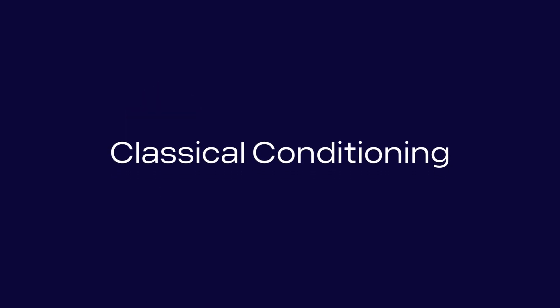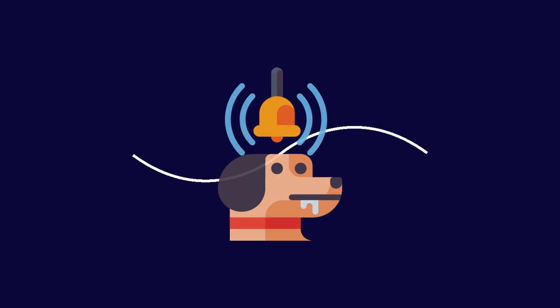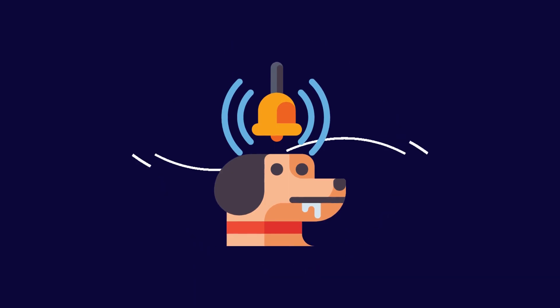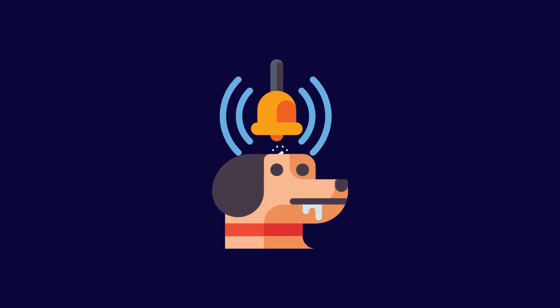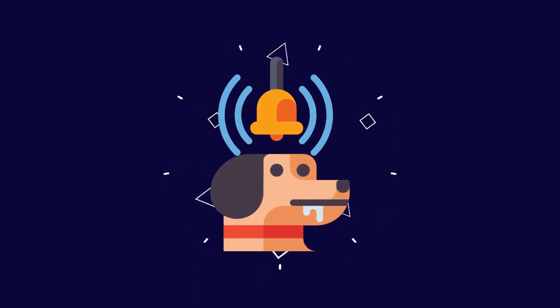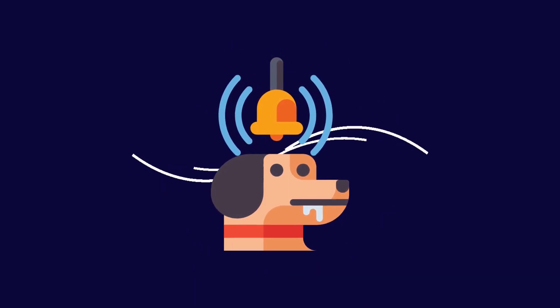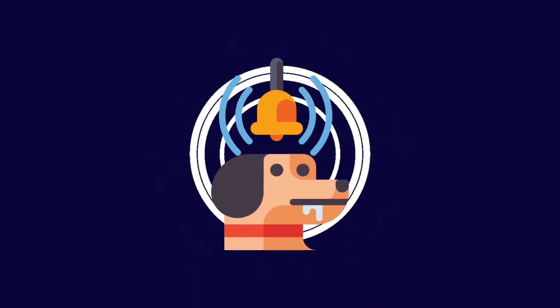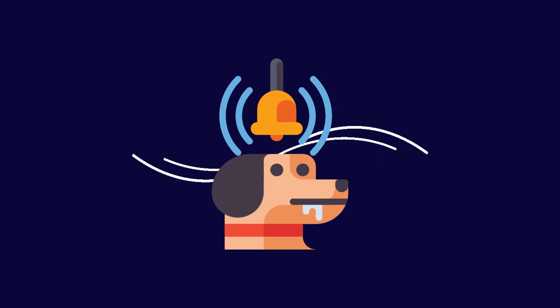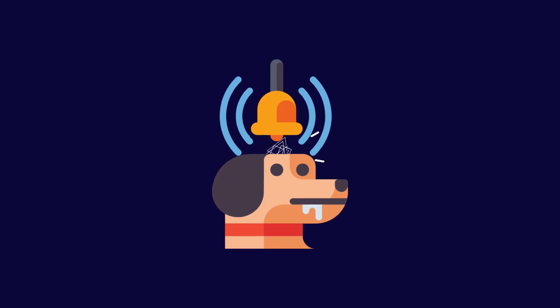The essence of stimulus discrimination lies in classical conditioning, an essential learning mechanism. Imagine a scenario where a bell is rung consistently before presenting food to a dog. Over time, the dog learns to associate the bell sound with the impending arrival of food and salivates merely at the sound.